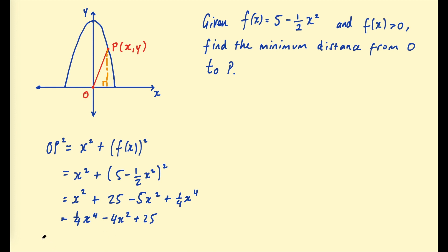So if we let O to P equal some function g of x, for example, we can differentiate this, and then we're going to be able to find the minimums of that function. So let's find g dash of x. So applying the power rule to each term in this function, that will give us x cubed minus 8x. The plus 25 is just 0. The derivative of any constant is always 0.